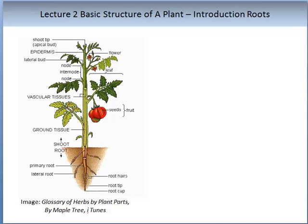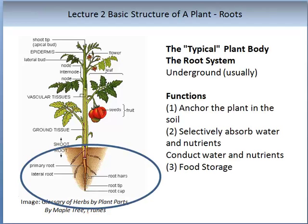The following image of the basic structure of a plant was introduced in Lecture 1 and identifies many of the principal anatomical parts of a plant. In this lecture, we are going to learn about the root structure. Roots are usually located underground, although there are some species that are an exception to this, such as the orchid family.